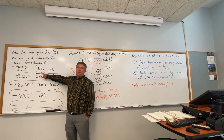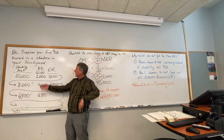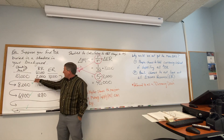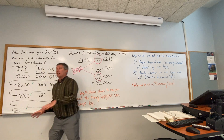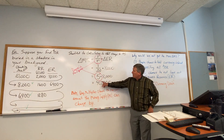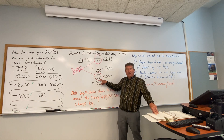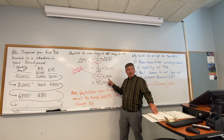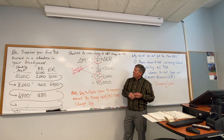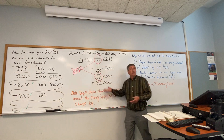If the Federal Reserve decreases the required reserve ratio to 0.1, required reserves become $1,000, excess reserves become $9,000, and the whole chain expands. The multiplier becomes 10 instead of 5, and the initial excess reserves are $9,000 instead of $8,000. So 9 times 10 is $90,000. Cutting the required reserve ratio in half more than doubled the money supply.